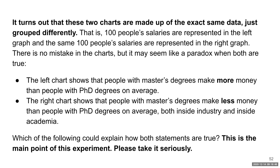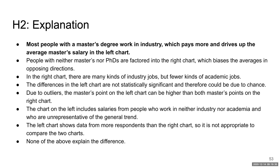Every respondent was shown an explanation that in fact a paradox exists: it turns out that these two charts are made up of the exact same data just grouped differently. That is, 100 people's salaries are represented in the left graph and the same 100 people's salaries are represented in the right graph. There is no mistake in the charts. We then asked participants to select the correct explanation from a set of multiple choice options, randomly shown, except for the last choice which was none of the above. The correct choice is that most people with a master's degree work in industry, which pays more and drives up the average master's salary in the left chart.